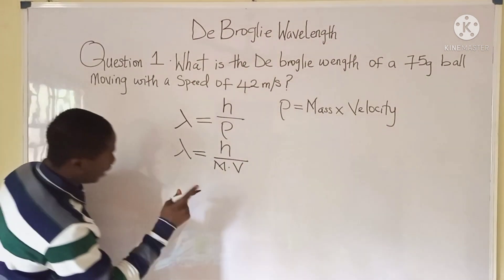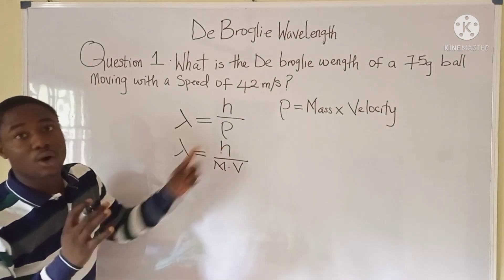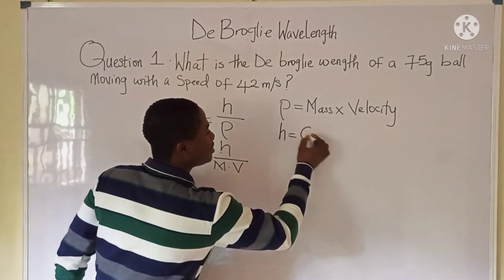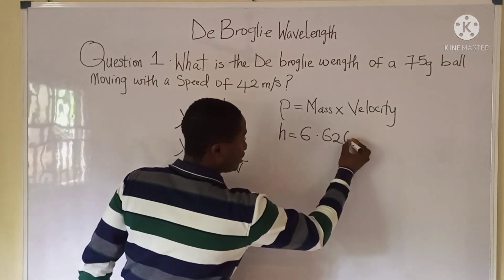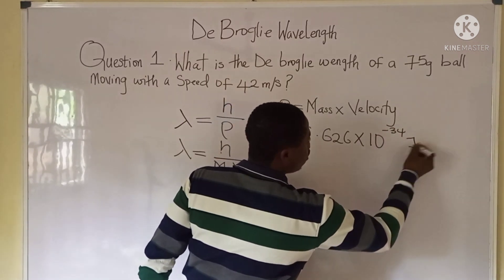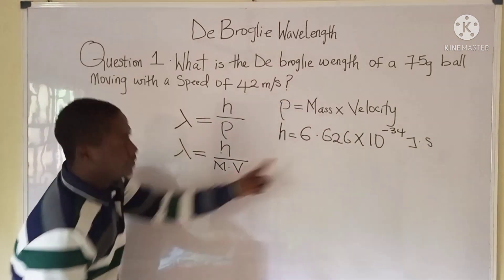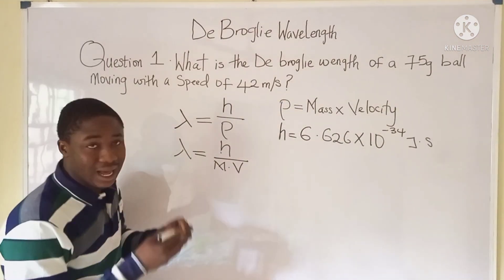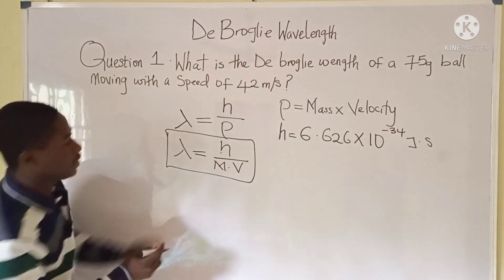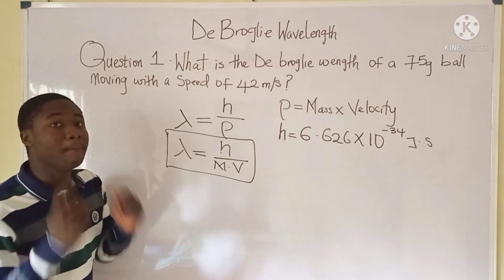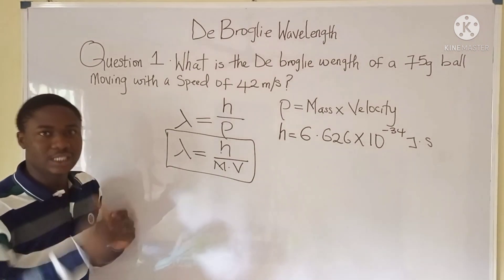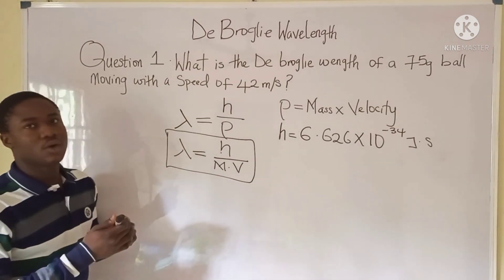Planck's constant h is 6.626 times 10 raised to the power of minus 34 joule-seconds. This is the formula you must memorize when solving problems on de Broglie's wavelength. Now let's go ahead and solve the practice problem on the board.